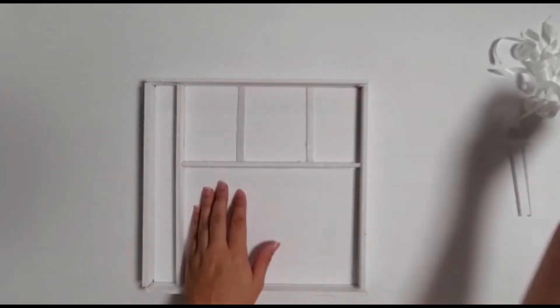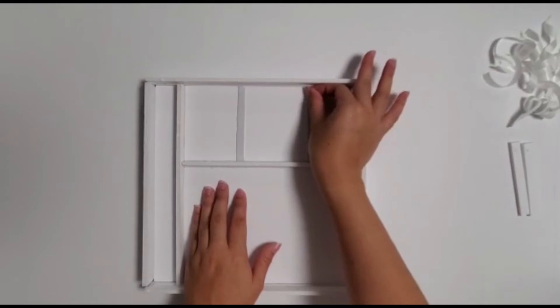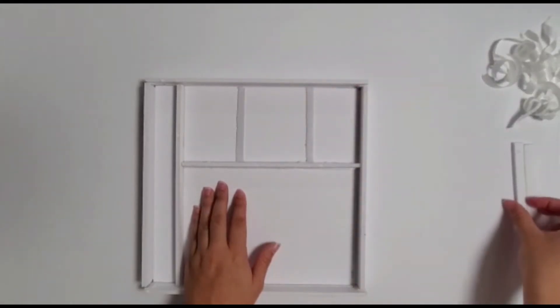Lastly, peel off the two short pieces of tape from the A piece and stick one F piece on top of each one.